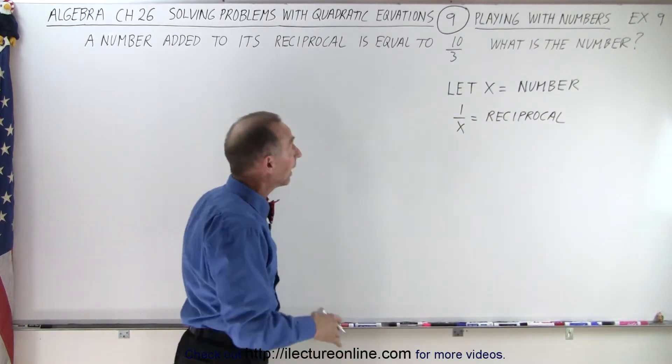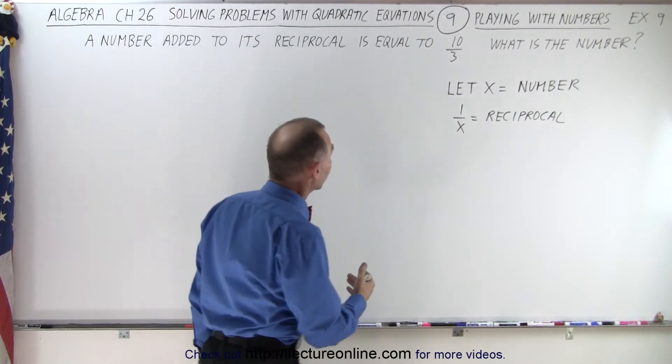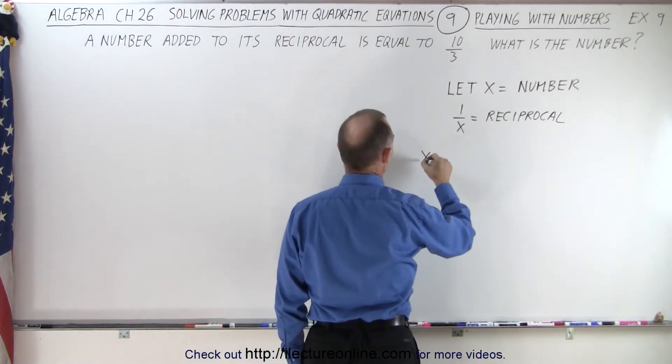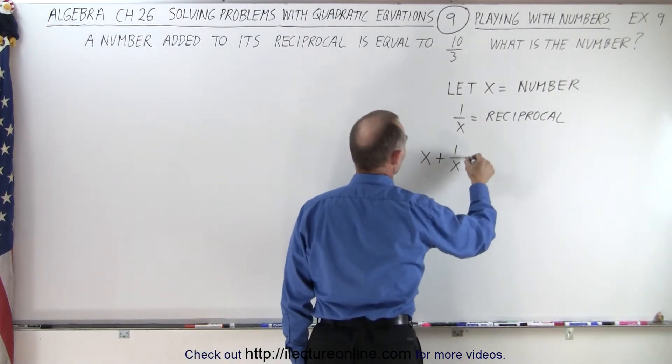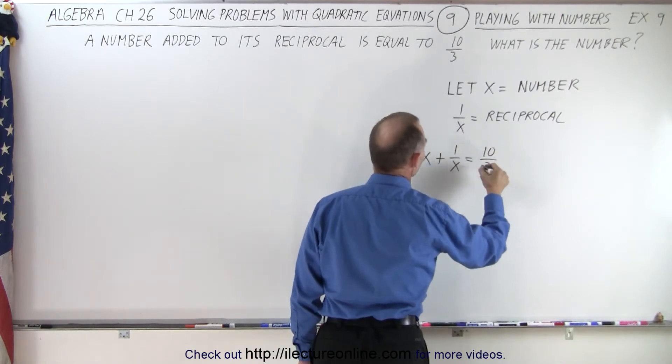Now we're going to add them together, and they should add up to 10 over 3. So that means that x plus 1 over x equals 10 divided by 3.